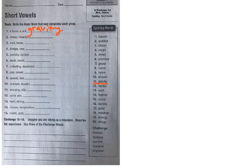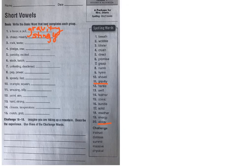Number two says 'cheap or miserly.' It's not a super widely used word with kids, but you understand what it is to be cheap. One way to describe miserly and cheap is stingy — people who don't share easily or spend easily. Write stingy on the line.